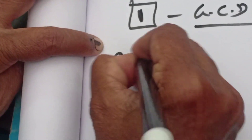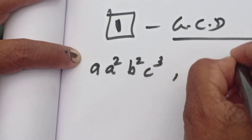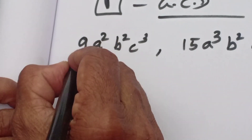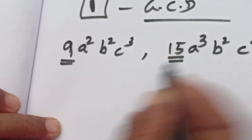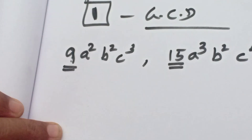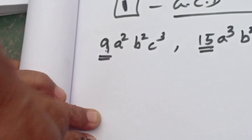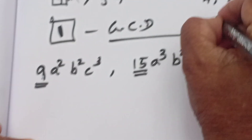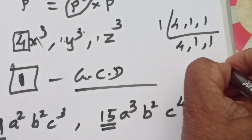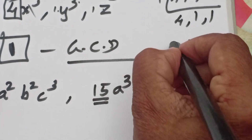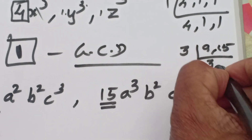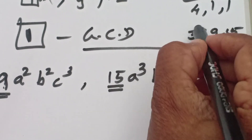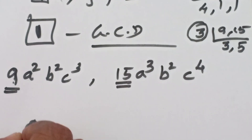Next: 9 a squared b squared c cube and 15 a cube b squared c to the power 4. First you have to find out the GCD for the numbers. What is the GCD of 9 and 15? 3. Otherwise, repeat subtraction: 15 minus 9 is 6, then 9 minus 6 is 3, then 6 minus 3 is 3, then 3 minus 3 is 0. So 3 is the GCD.